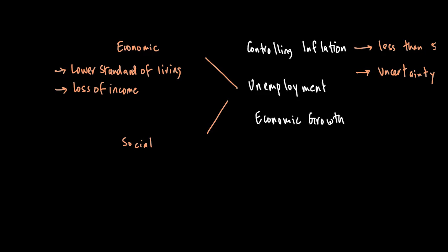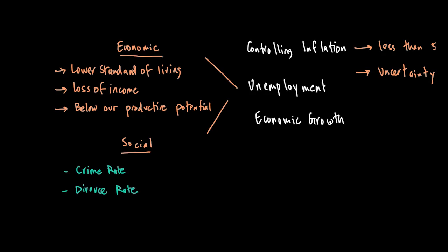When scarce resources are not used properly, there will be inefficiency in an economy. Rising unemployment can also cause social issues like rising crime rates, rising divorce rates, and even health indicators in an economy to worsen. So keeping unemployment low becomes a very key important macroeconomic goal.